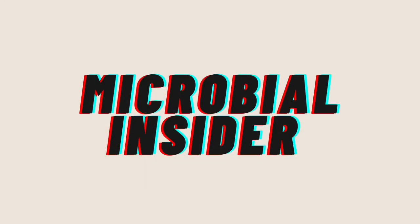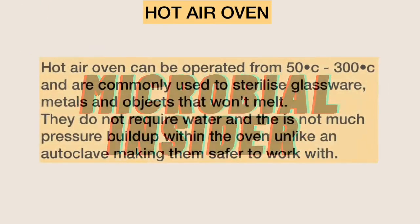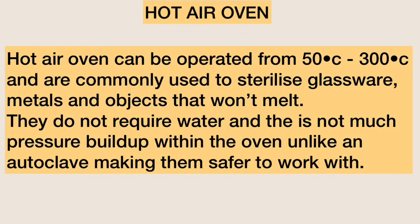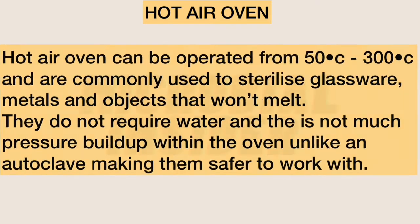Methods that employ dry heat include the hot air oven. Hot air ovens can be operated from 50 to 300 degrees and are commonly used to sterilize glassware, metals, and objects that won't melt. They do not require water, and there is not much pressure built up within the oven — unlike an autoclave — making them safer to work with.